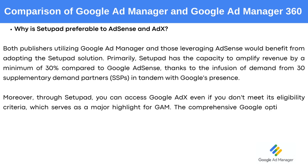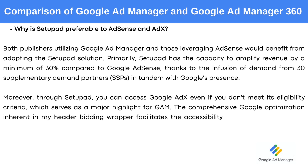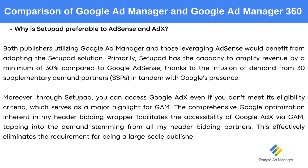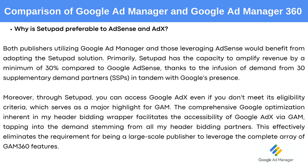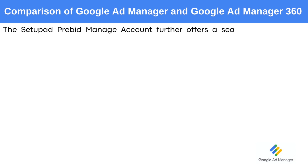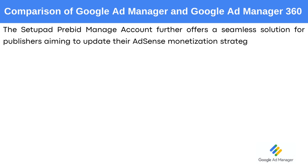The comprehensive Google optimization inherent in the header bidding wrapper facilitates the accessibility of Google Ads via Google Ads Manager, tapping into the demand stemming from all header bidding partners. This effectively eliminates the requirement for being a large-scale publisher to leverage the complete array of Google Ads Manager 360 features. The SetupAd pre-bid manager account further offers a seamless solution for publishers aiming to update their AdSense monetization strategy and enhance returns from their ad inventory.